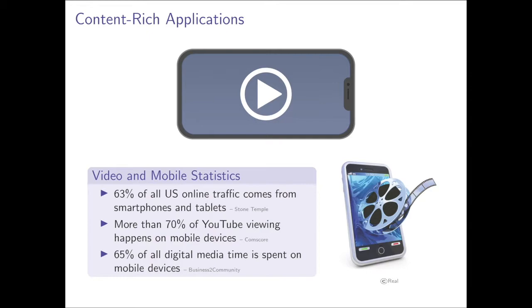A third driver of data requirement for wireless devices has to do with mobile videos. As people started to watch more and more videos, their need for bandwidth increased. But at this point, 63% of US traffic is on smartphones and tablets, more than 70% of that is YouTube viewing, and 65% of all digital media time is spent on mobile devices. So you can hardly ask people to watch more movies.